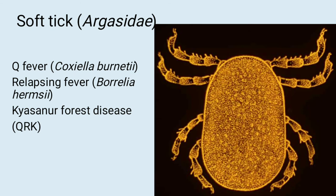Identify the insect: This is soft tick, or Argasidae. It transmits Q fever (Coxiella burnetii), relapsing fever (Borrelia), and Kyasanur Forest Disease. Mnemonic: QRK — Q for Q fever, R for relapsing fever, K for Kyasanur Forest Disease.